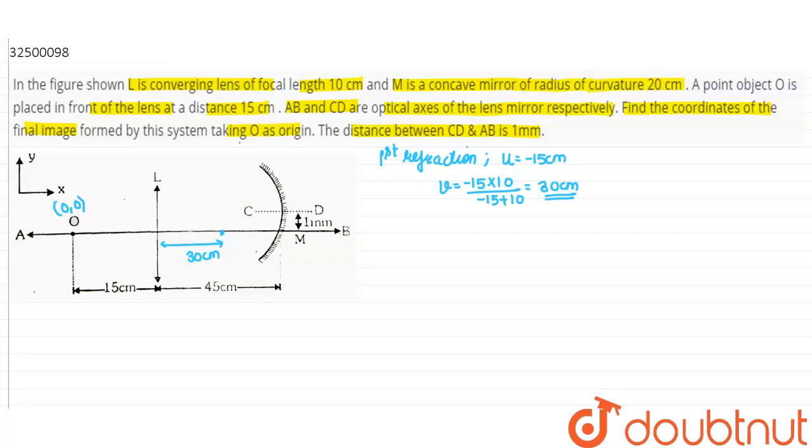Second step, reflection from mirror. This image will be reflected. The distance for the mirror is minus 15 cm.